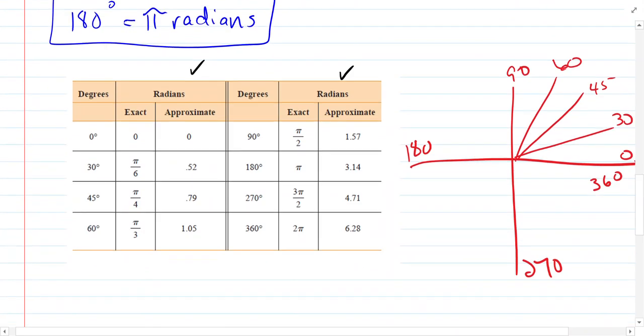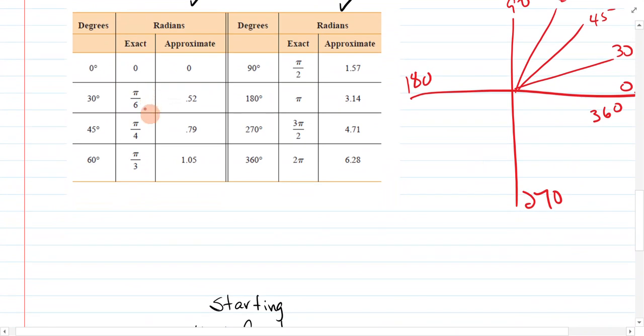So let's go back to the chart. Pi over 6, and you can just figure 30 goes into 180 6 times, 45 goes into 180 4 times, 60 goes in 3 times, 90 goes in 2 times, 180 goes in 1 time. 270 is 1 and a half times 180. And 360 is 2 times 180. So that's where that comes from.